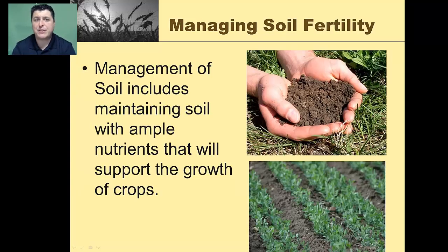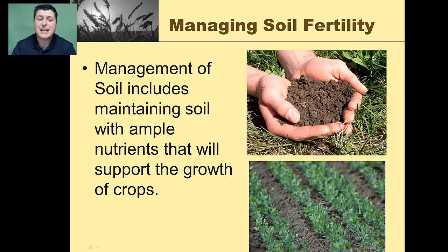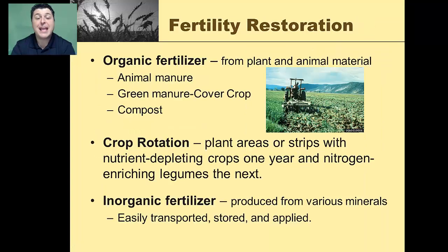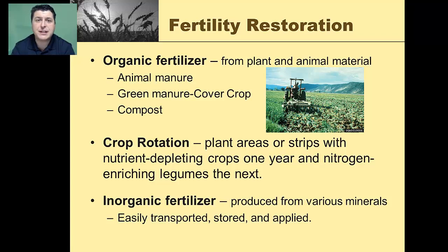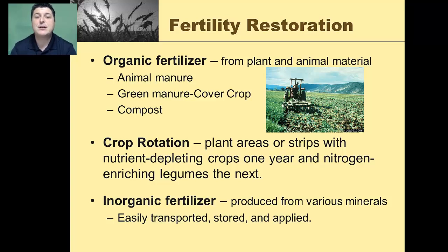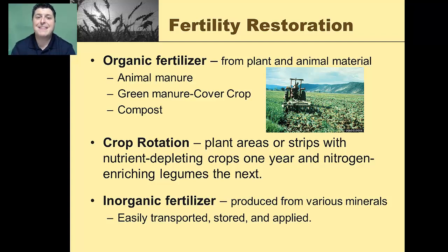Another key issue is soil fertility. Soil with ample nutrients supports crop growth well into the future. One strategy for restoring fertility is adding organic fertilizers — materials from plant and animal sources like animal manure, which is rich in nitrates and phosphates. Green manure is a cover crop planted over the winter and then tilled under, adding nitrogen to the soil. Compost made from leaves and grass clippings provides carbon and nitrogen material that enriches the soil.